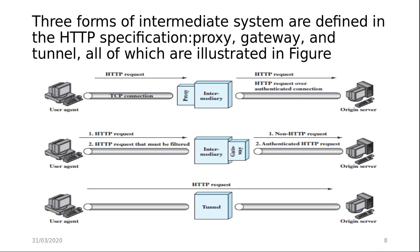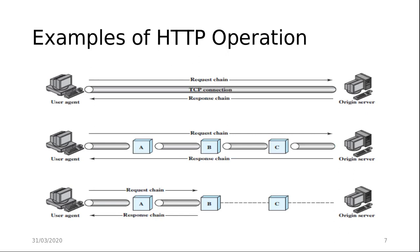Returning to the previous slide, there is a request chain and response chain related to cache. Cache is a facility that may store previous requests and responses for handling new requests. If a new request arrives that is the same as a stored request, the cache can supply the stored response rather than accessing the resource indicated in the URL. The cache can operate on a client, a server, or an intermediate system other than a tunnel. In the figure, intermediary B has cached a request-response transaction so that a corresponding new request from the client need not travel the entire chain to the origin server. Not all transactions can be cached, and a client or server can dictate that a certain transaction may be cached only for a given time limit.